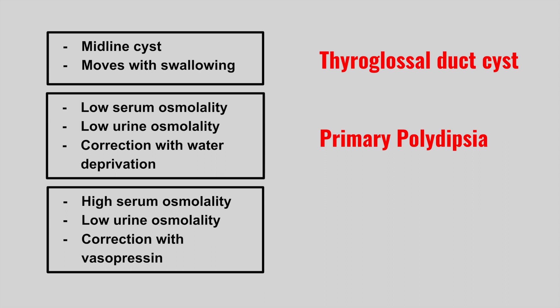The next patient has high serum osmolality, low urine osmolality, and it corrects with vasopressin. This is central diabetes insipidus.